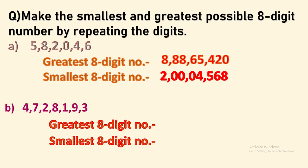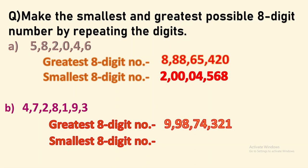The next question is the easiest one. Just repeat the greatest digit to form the greatest number and the smallest digit for the smallest number. The greatest eight digit number is 9 crore 98 lakh 74,321 and the smallest eight digit number is 1 crore 12 lakh 34,789. I hope this concept is clear and you can now do the textbook exercises.